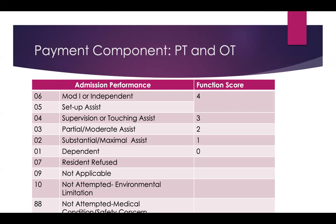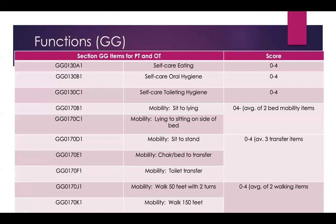This is the payment component for PT and OT — admission performance scores from modified and dependent (06) to not attempting (88). Functional scores determine how insurance pays. The codes cover specific categories: self-care and eating, oral hygiene, toileting hygiene, and mobility. For bed mobility items, think side rails and positioning pillows. Transfer items include sliding boards, wheelchairs, or Hoyer lifts. Walking items include walkers and canes.